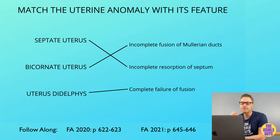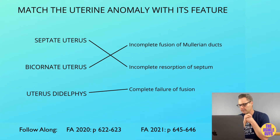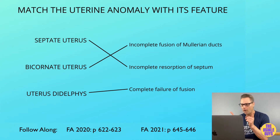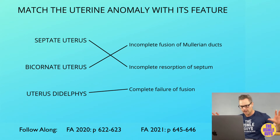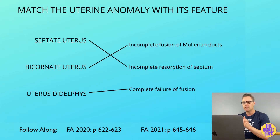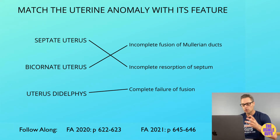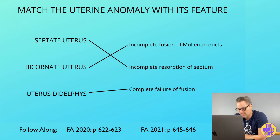The paramesonephric ducts develop into the female internal structures, including the fallopian tubes, the uterus, and the upper portion of the vagina. The lower part of the vagina comes from the urogenital sinus — very high yield. So for vaginal development: the upper part comes from the paramesonephric ducts, the lower part from the urogenital sinus. The male remnant is known as the appendix testis.